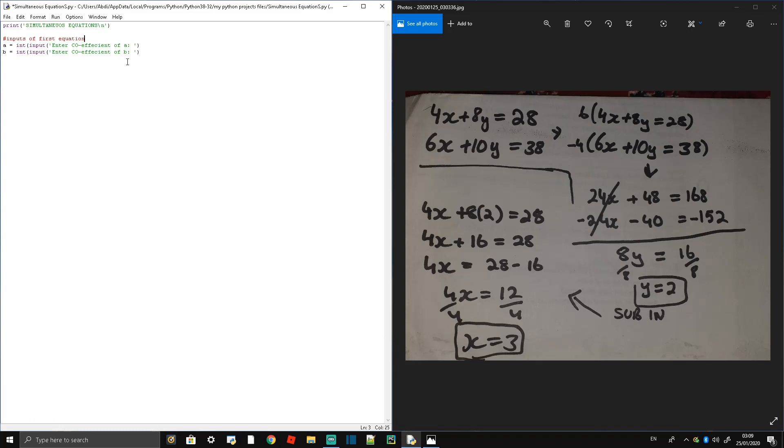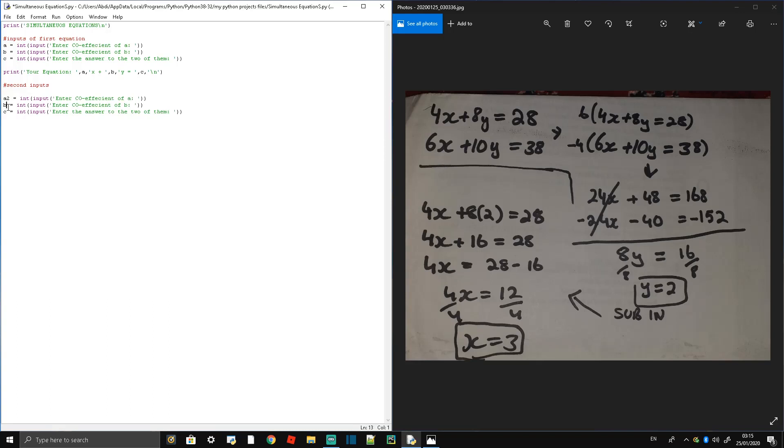Now we're just going to tell it to print the equation—the values we gave—and then form an equation out of it. So it just takes the 4 and adds an x, takes an 8 and adds a y, and then just adds an equal sign.